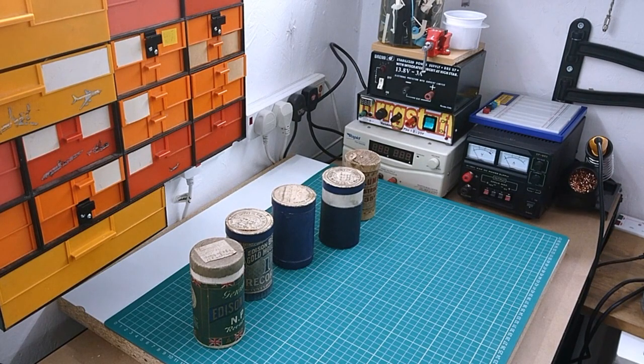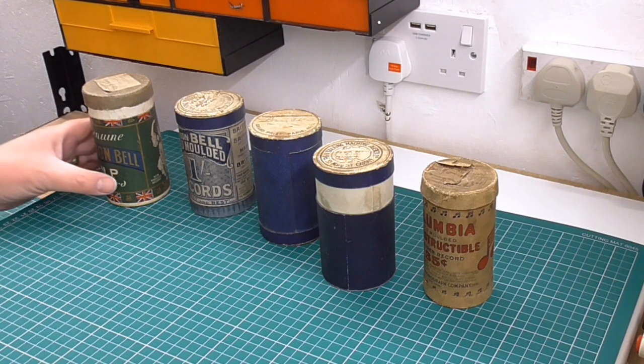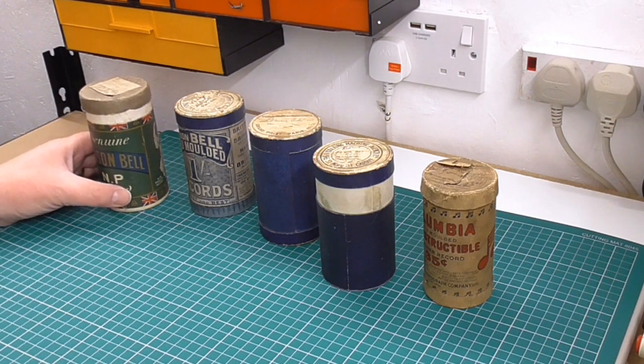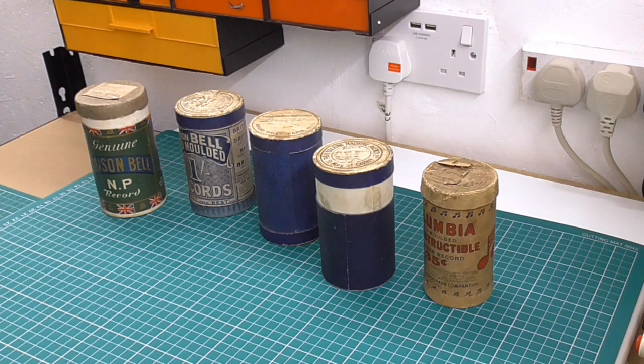I thought, what can I do that's sort of special? I thought about these things here. These are actually cylinders, or cylinder records. This is literally my whole collection. I reckon I might have somewhere in the region of 60 to 70, but I've got five cylinders, and I've been very curious to know what's on them.